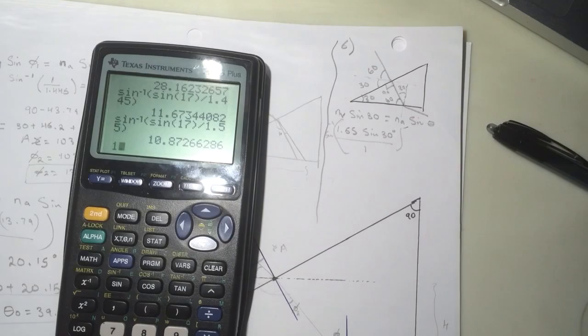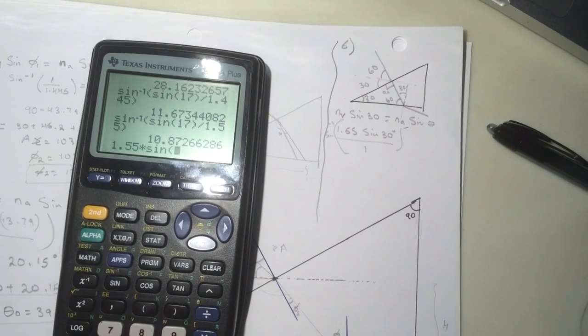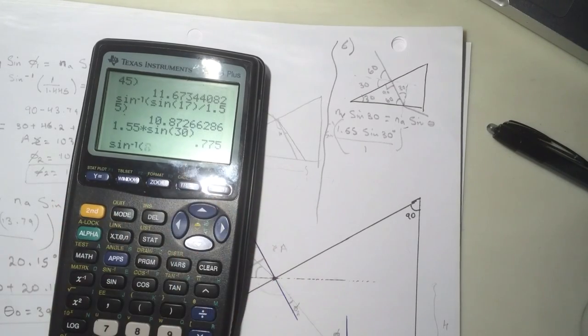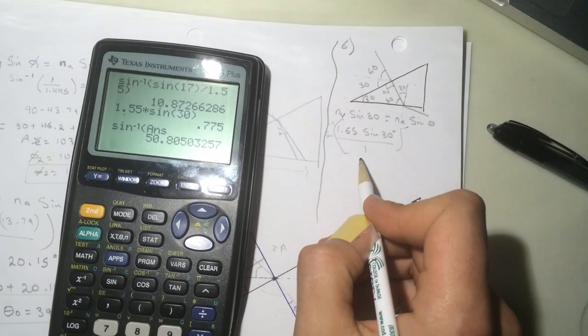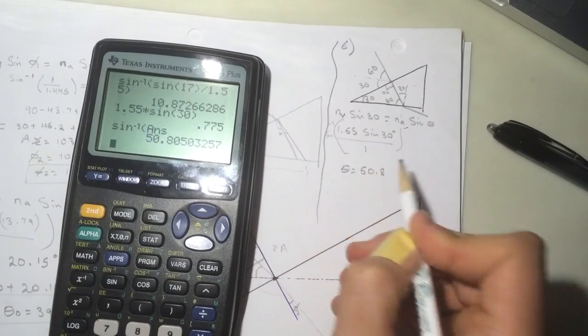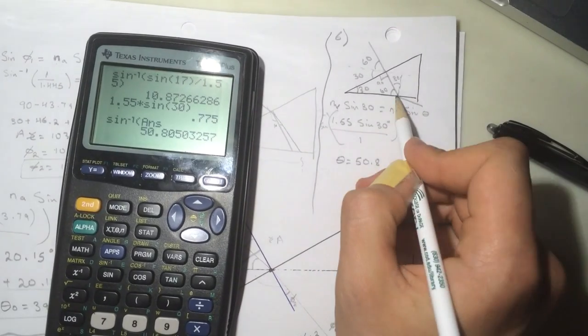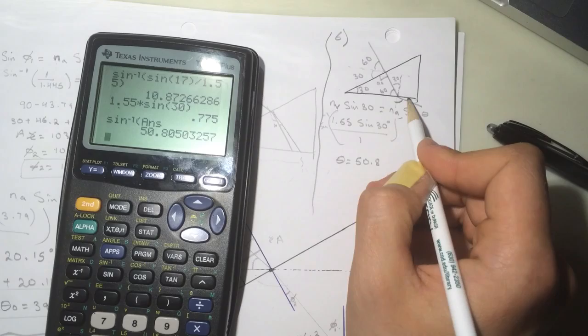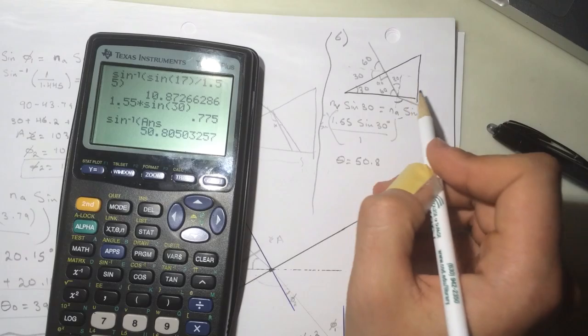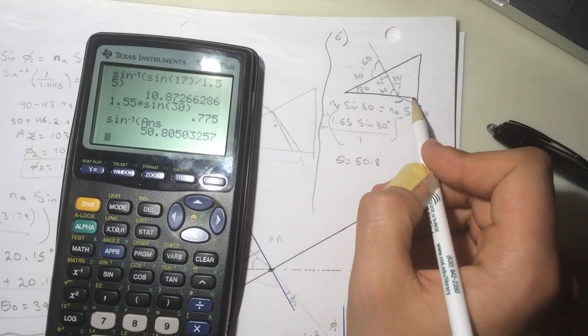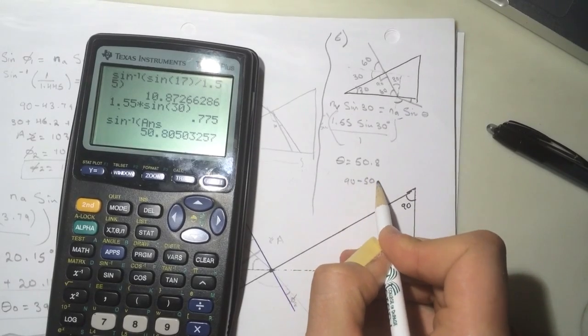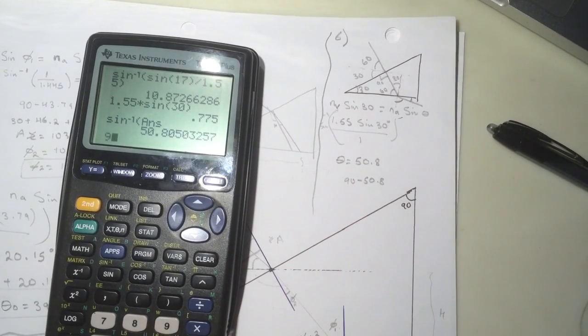1.55 times sine of 30 degrees, and take the sine inverse for the answer, and you'll get 50 degrees. So this theta will be 50 degrees, 50.8. And if you look again, this is the angle between the perpendicular and the perpendicular and this guy here. They want it with the x-axis, so you'll do 90 minus 50.8.